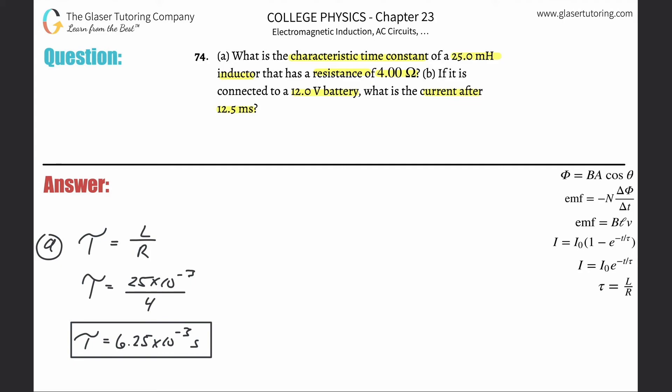All right. So we will assume that it is starting in the off position. And if it is starting in the off position, and then it is turned on, we're trying to find the current after 12.5 milliseconds. What we need to do is we need to use this formula over here on the right hand side. This is the formula to find the current at some point in time after the circuit's turned on.